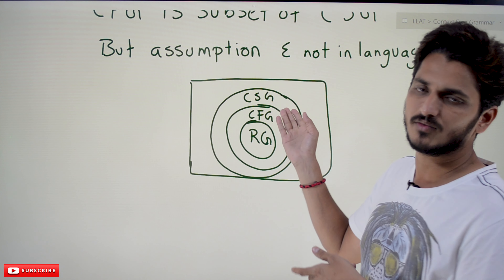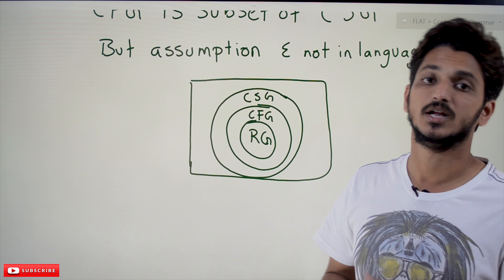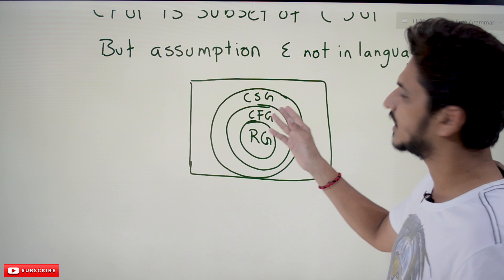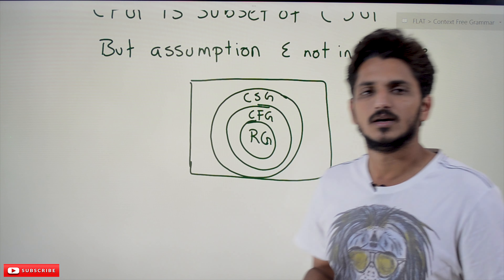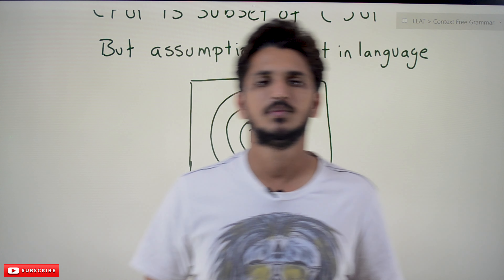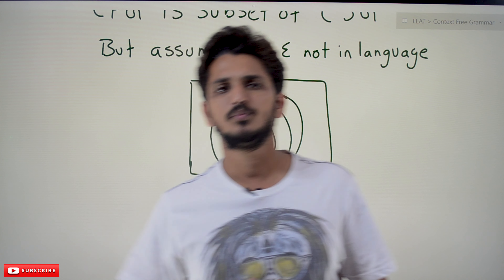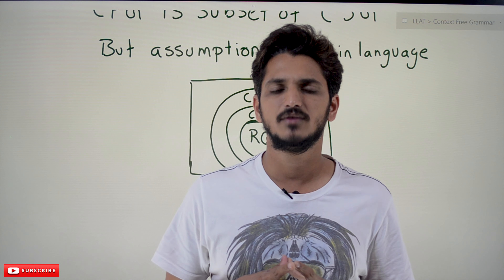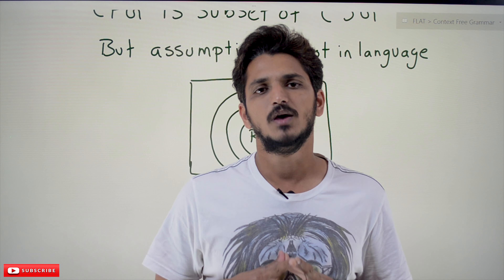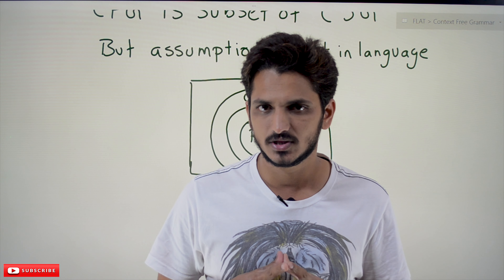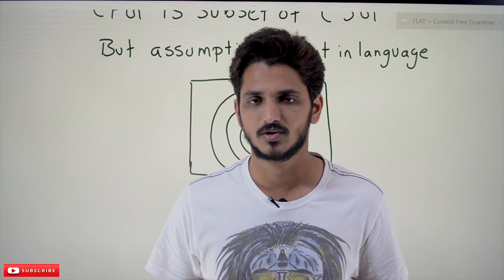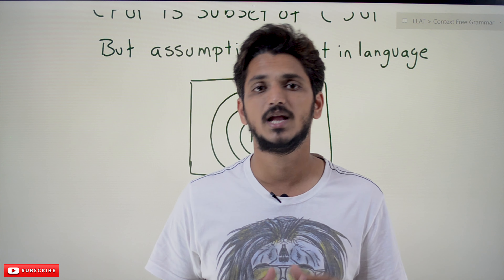One of those languages is a^n b^n c^n. In our next class we will understand the context sensitive grammar for a^n b^n c^n. Hope you understand the conditions of context sensitive grammar. If you have any questions please post them in the comment section below. Thanks for watching — if you haven't subscribed to our channel please subscribe and press the bell icon for the latest updates. Thank you.